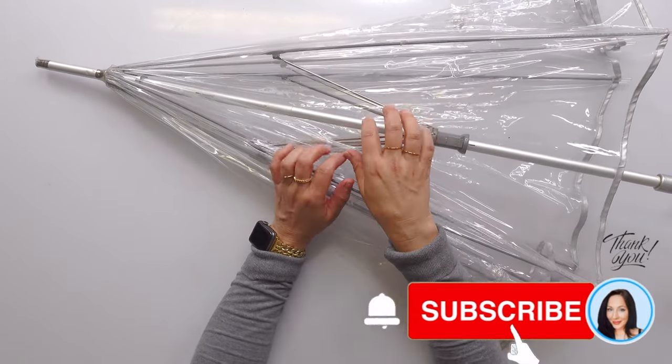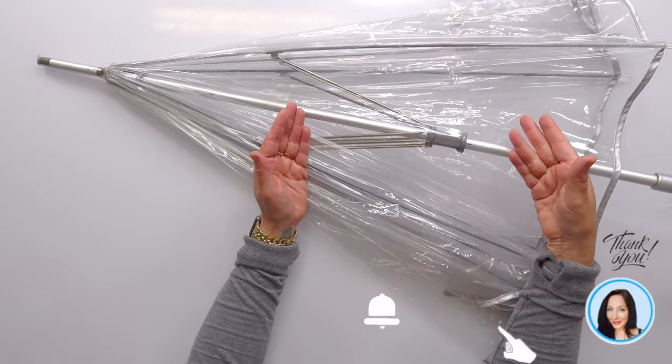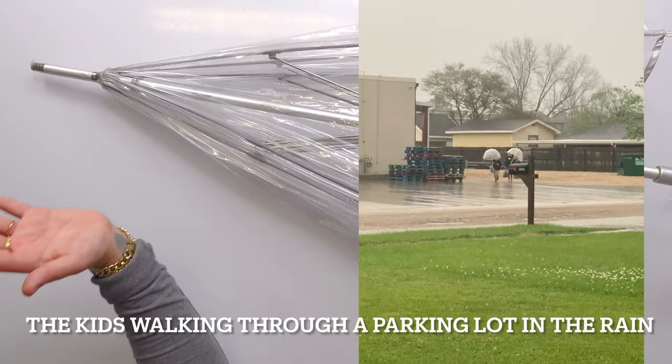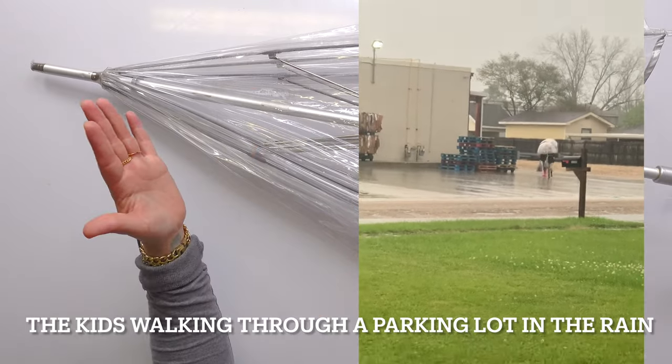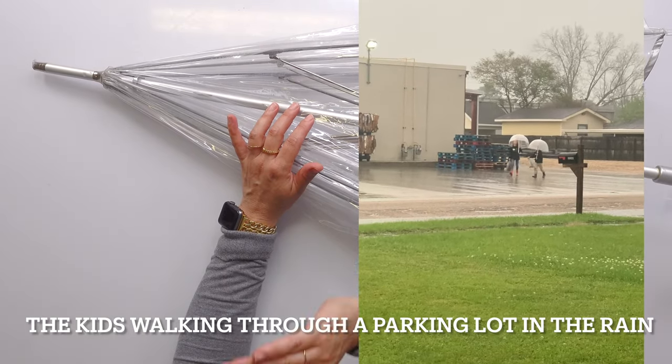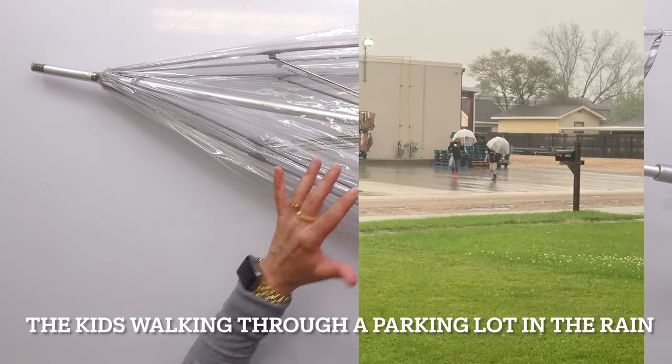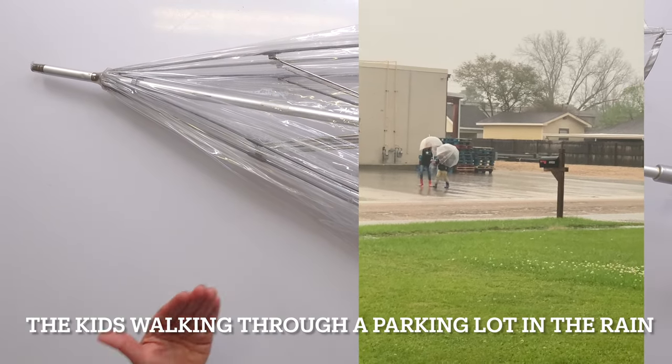But I love this because when it rains here, because it's completely clear, I can pull it down over myself and I'm not obstructing my visibility. So I can walk through the parking lot in torrential downpour, and I can pull this thing all the way down to basically cover myself to almost my waist.